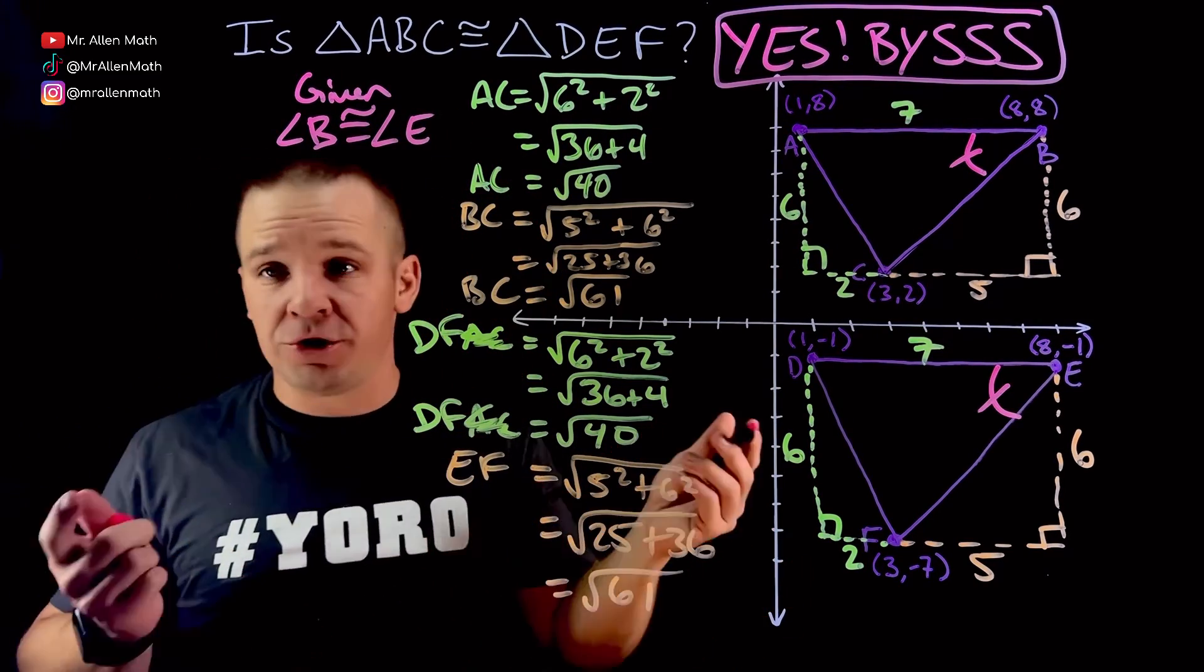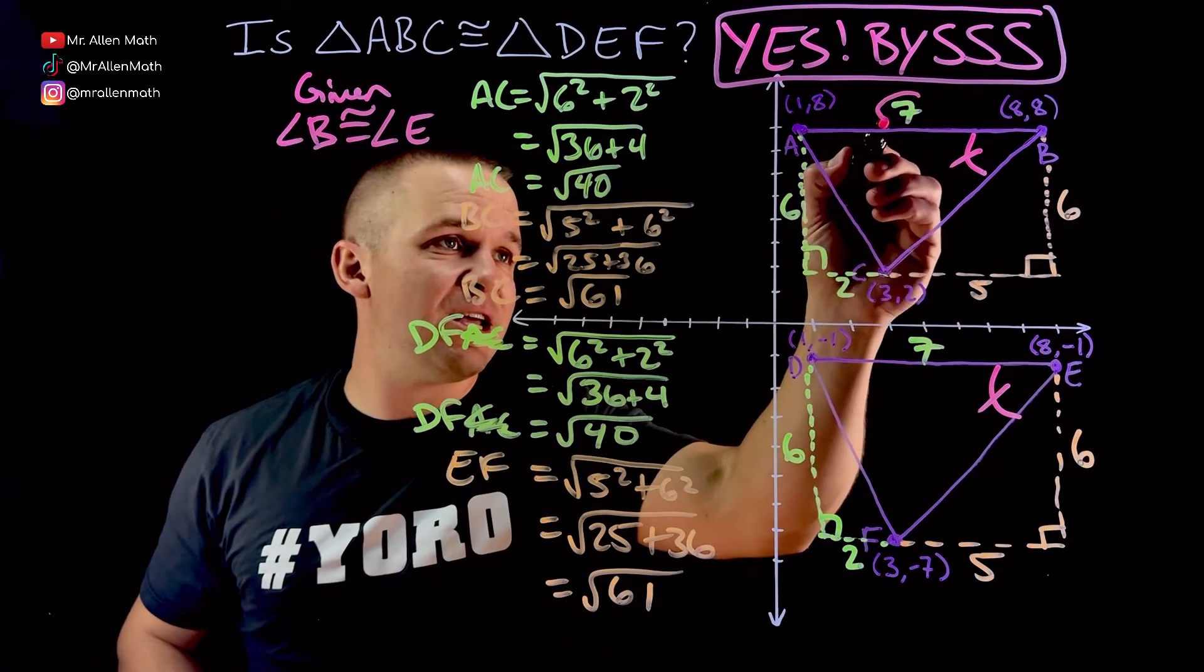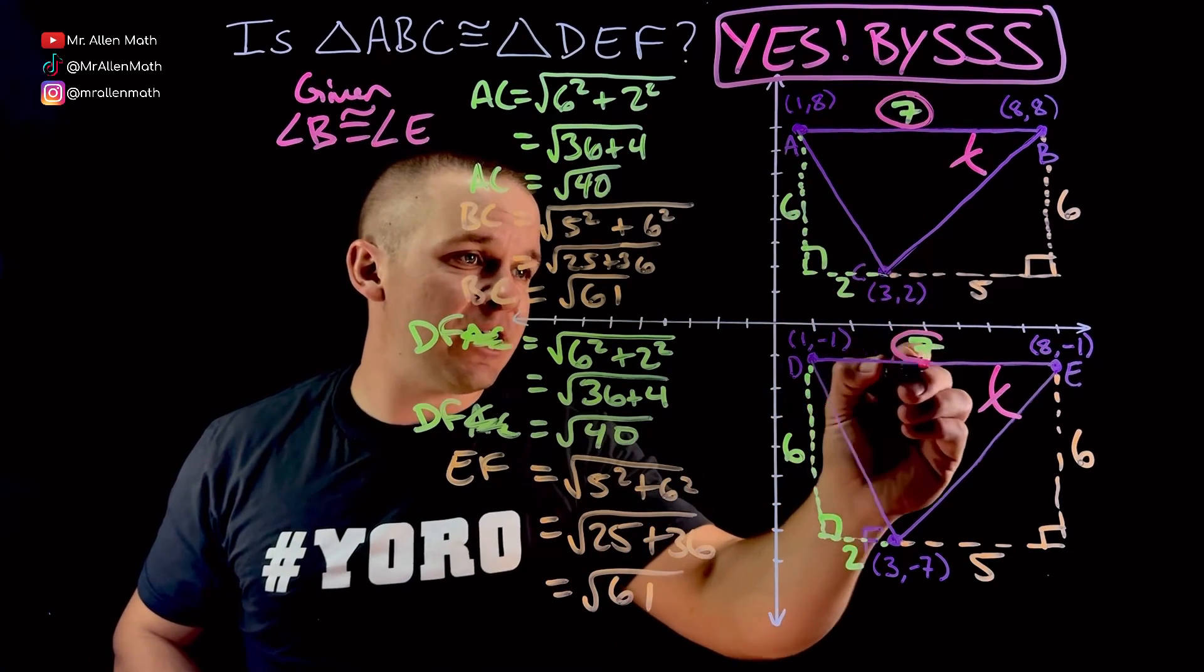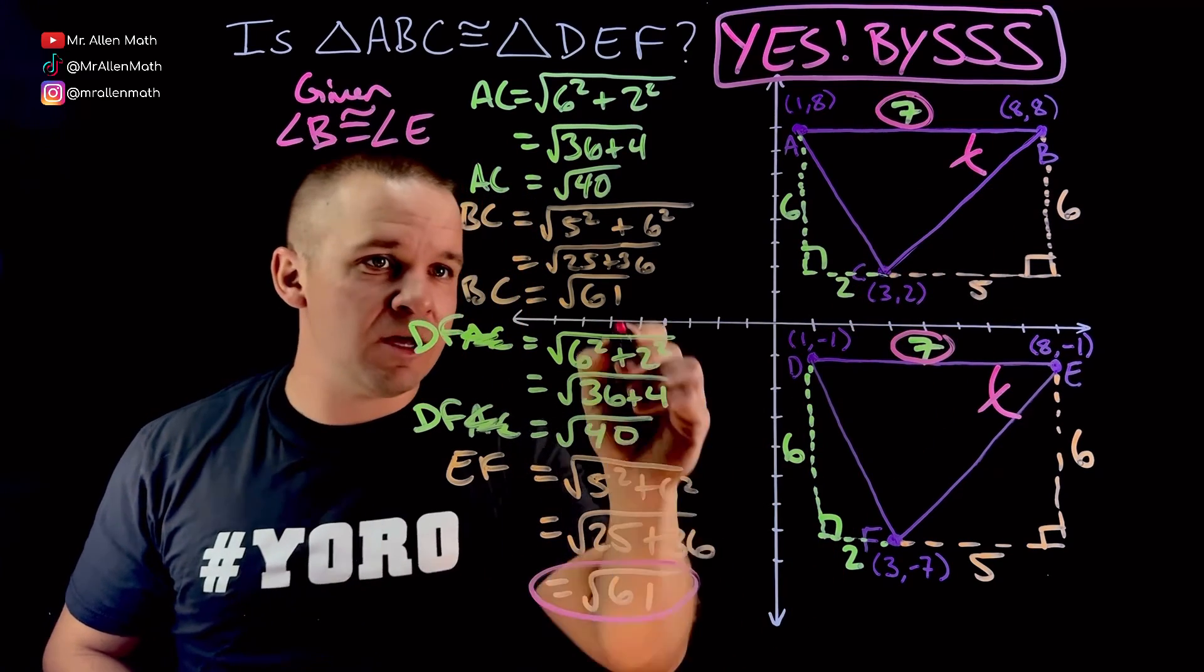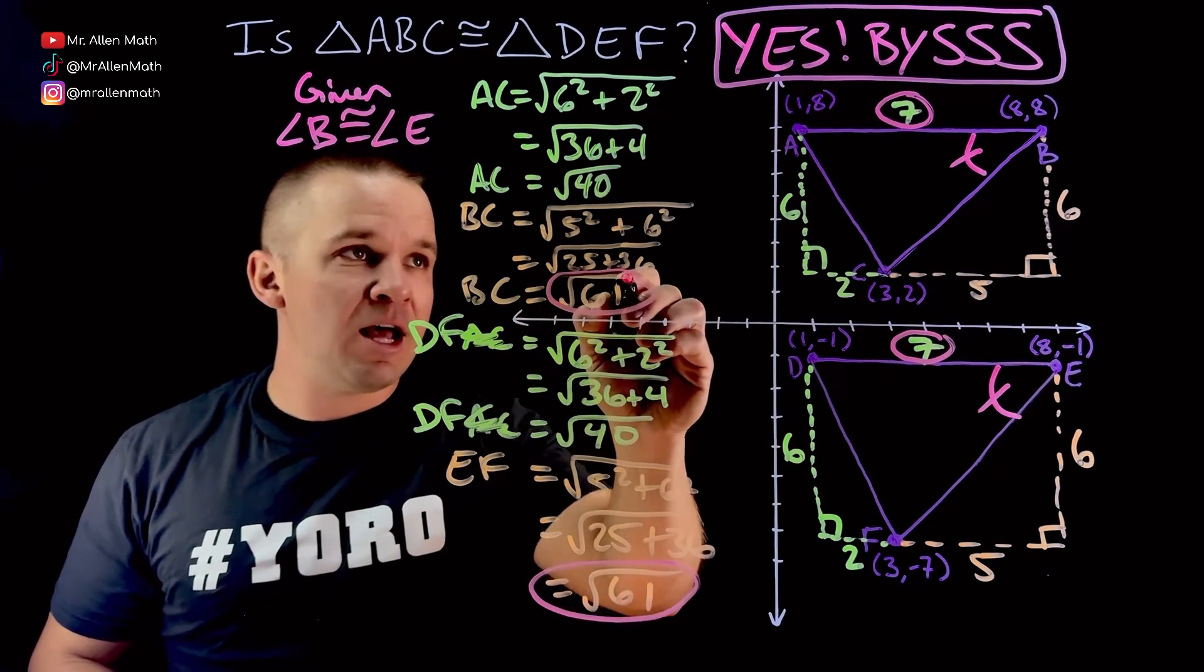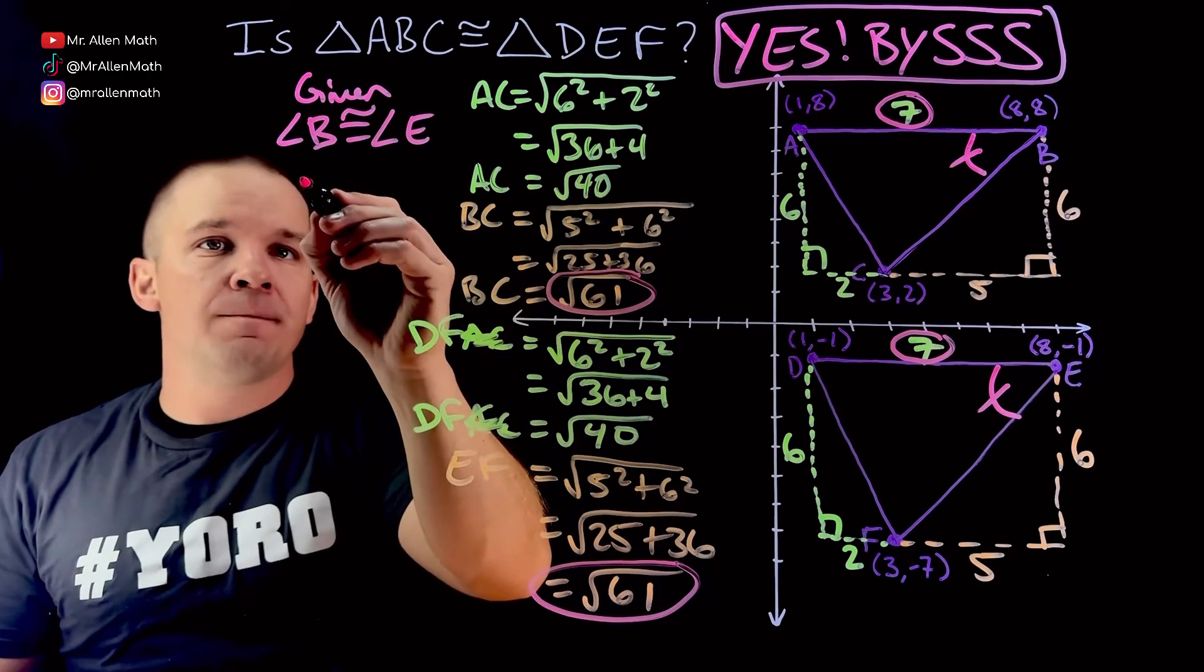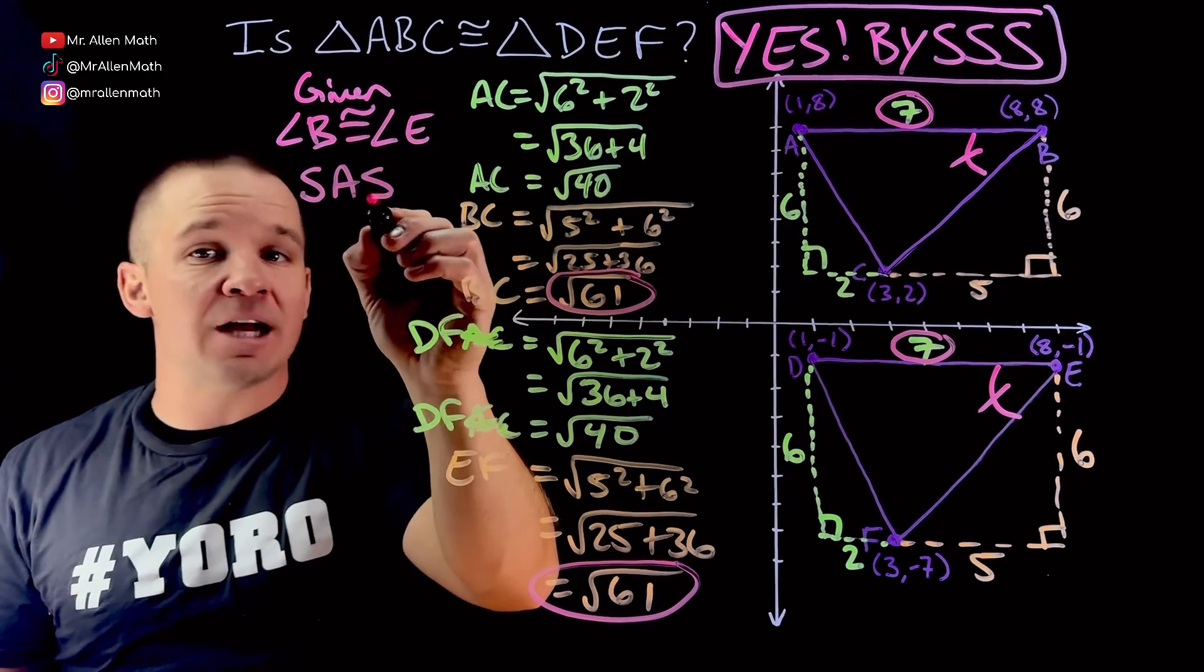And this side here by counting, and then getting this side right here, which we know is the square root of 61 and the square root of 61. And now I'd have it true by side, angle, side. So a little less work.